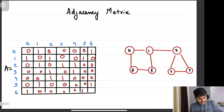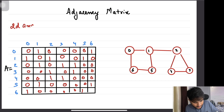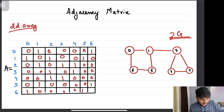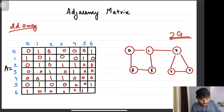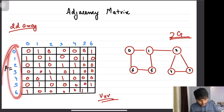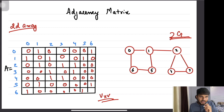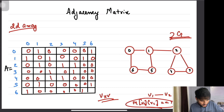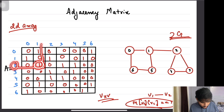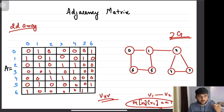Now, what about adjacency matrix? An adjacency matrix represents everything in the form of a 2D array. If this is your graph G, this is the corresponding adjacency matrix — a V×V matrix where rows represent vertices and columns represent vertices. If there is an edge between vertex v1 and v2, then matrix[v1][v2] equals 1. Here you can see if there is an edge between 1 and 2, the value is 1, and from 2 to 1 it is also 1.